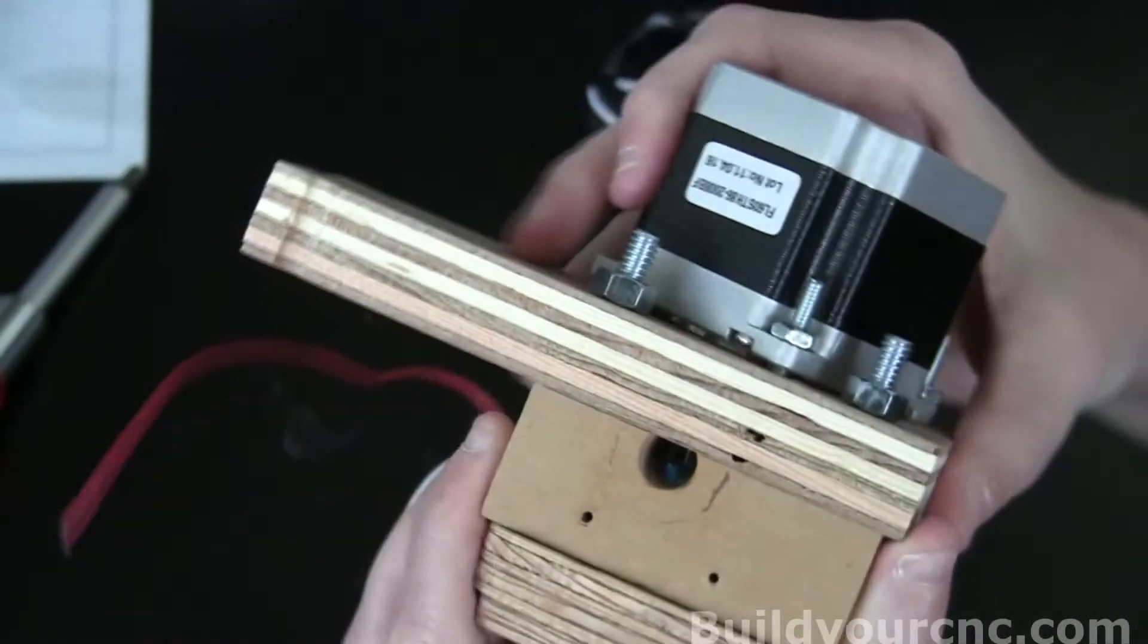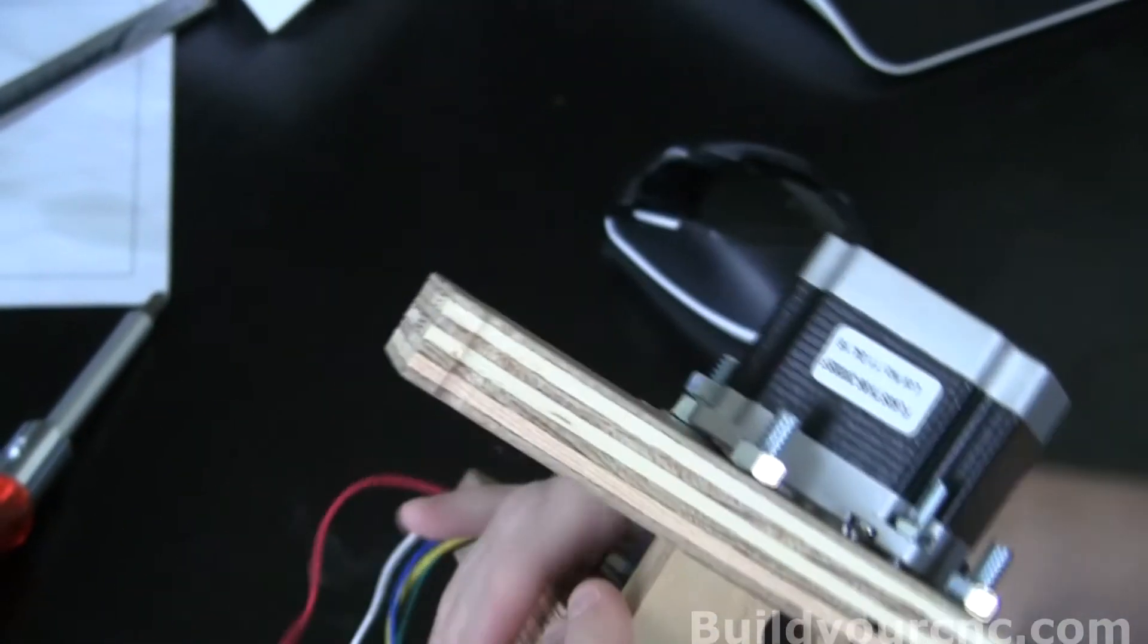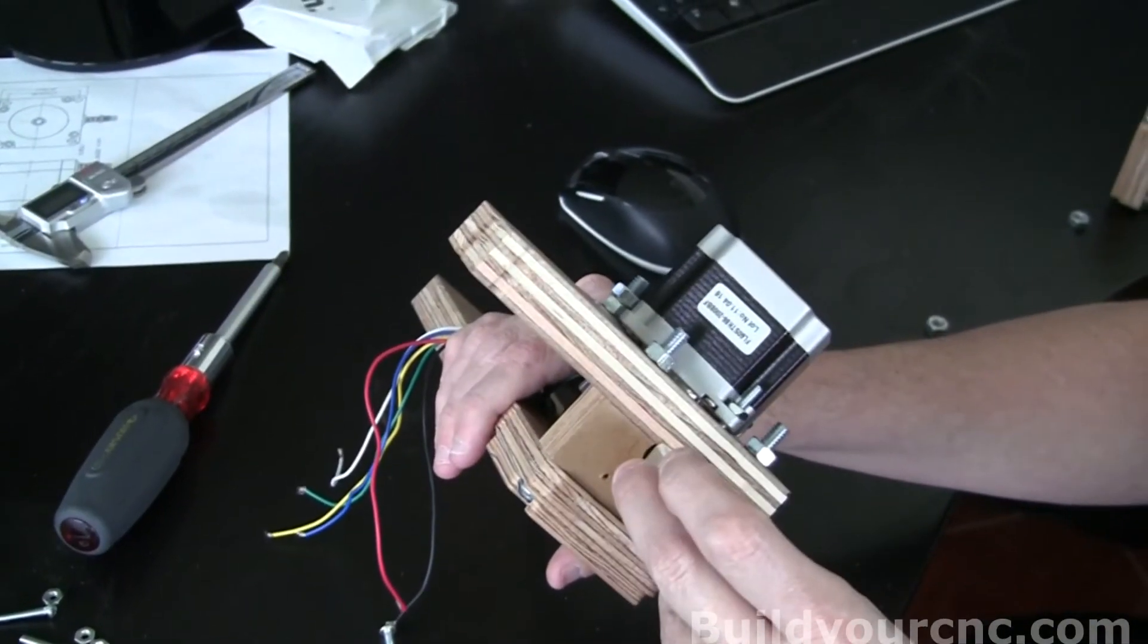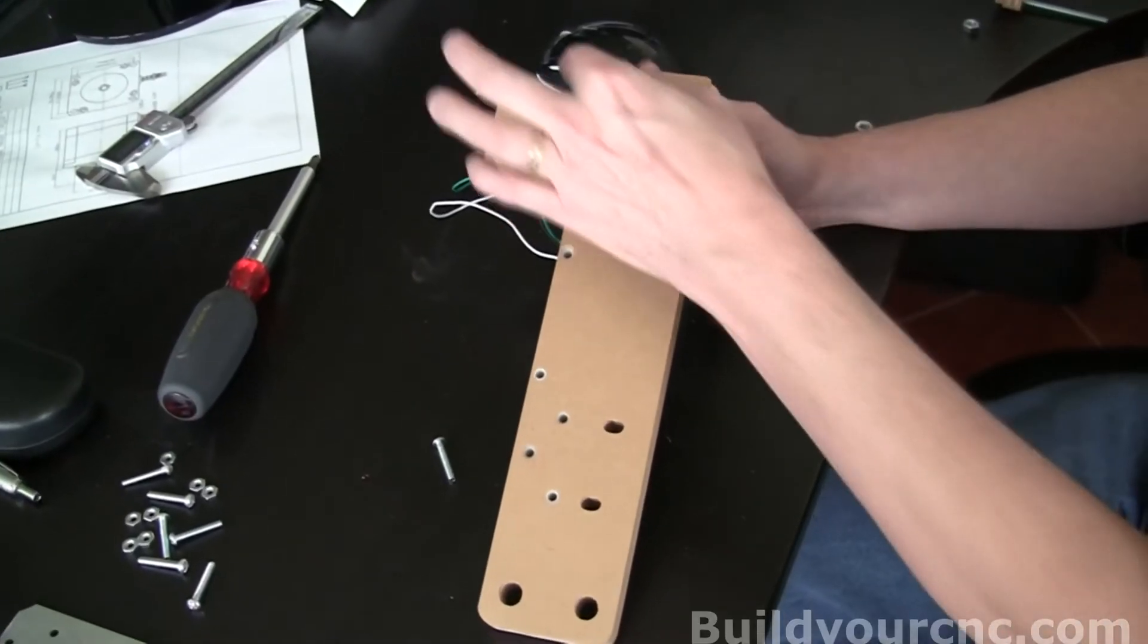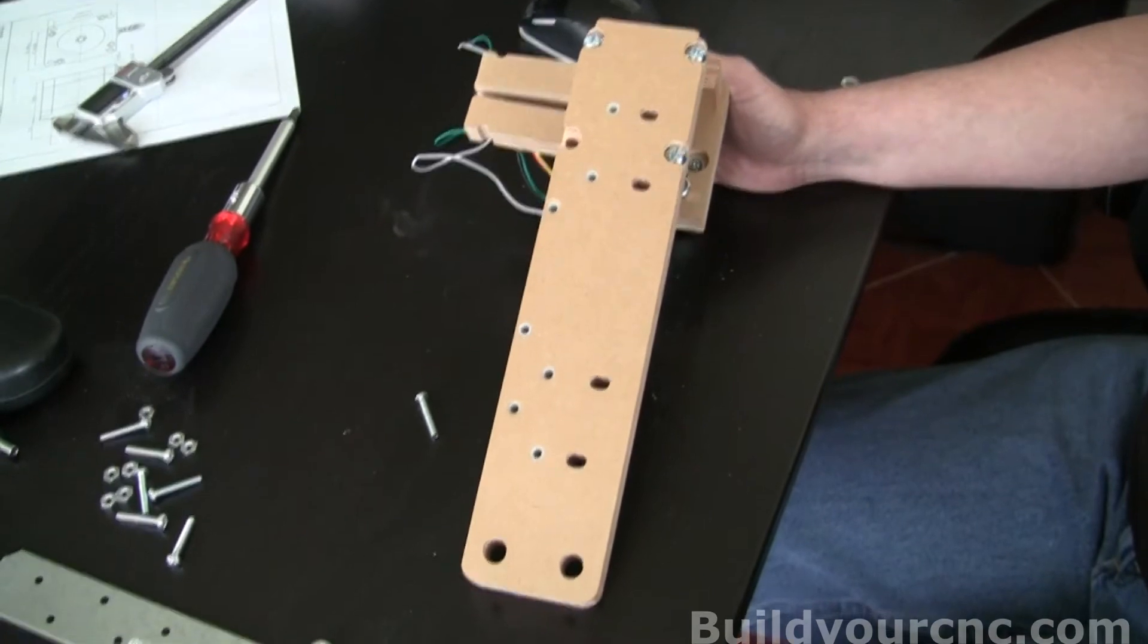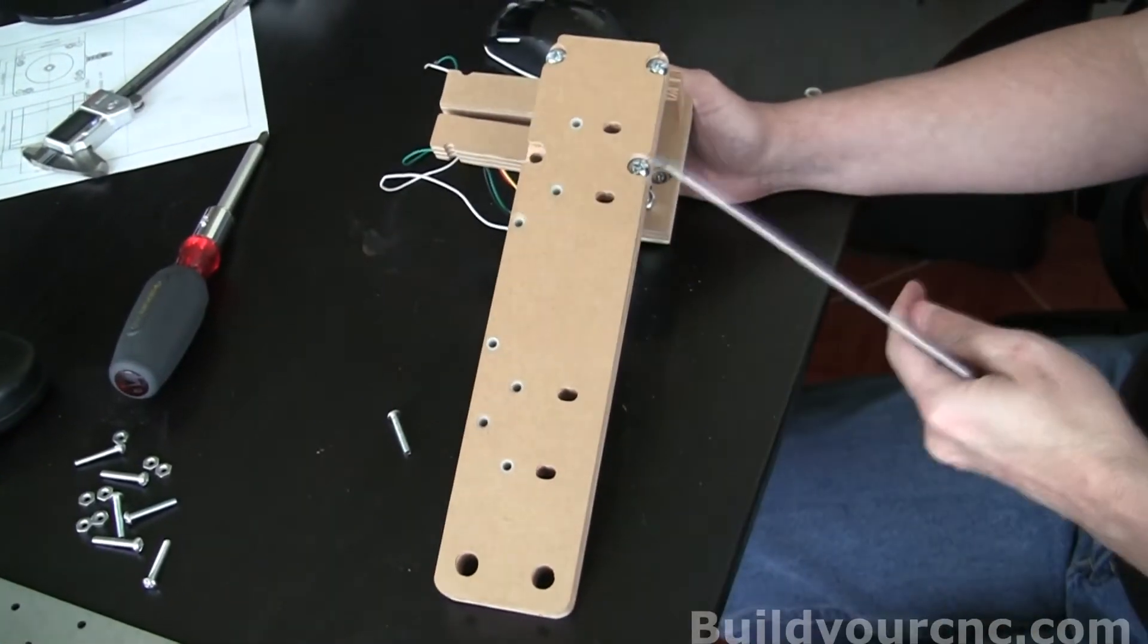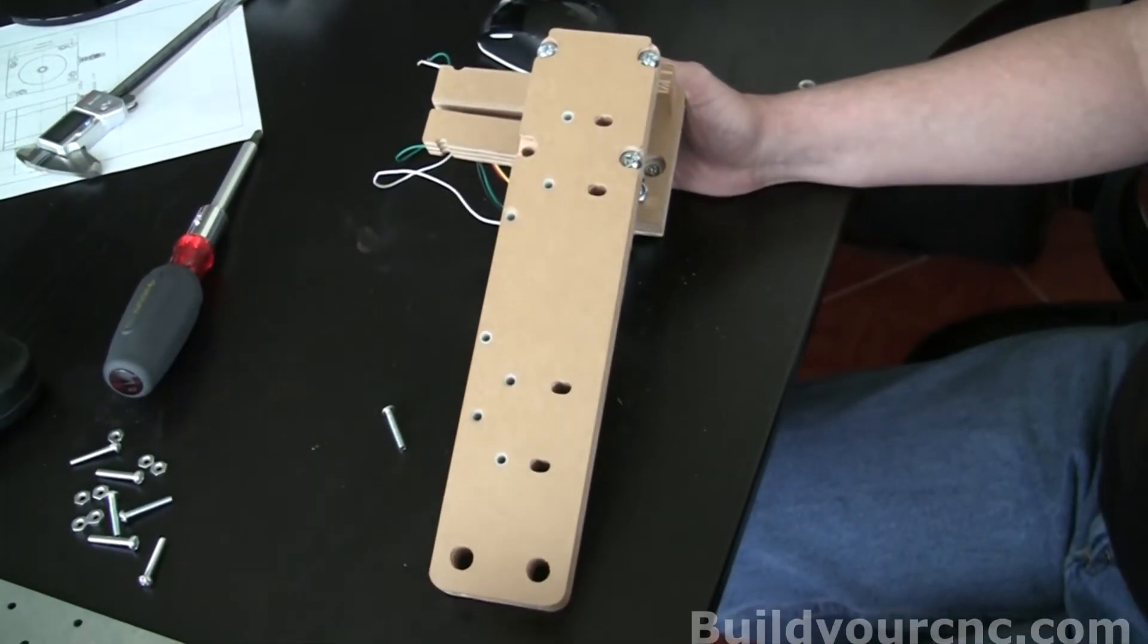You'll also notice that there are two holes here and another two holes here. That's where the metal plate goes to house the extruder. The extruder will be around this position here. Now you can put the rails on the back of the z-axis rail support piece.